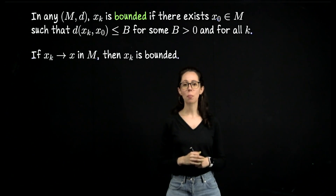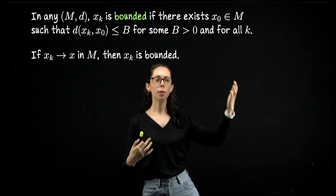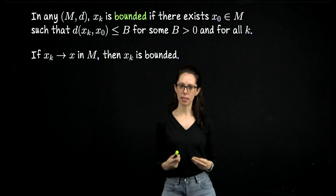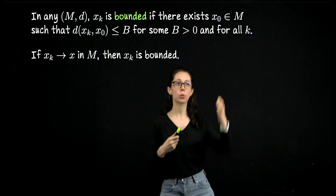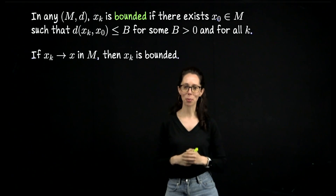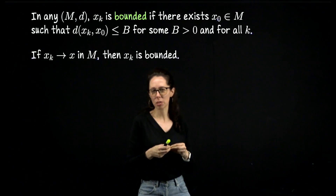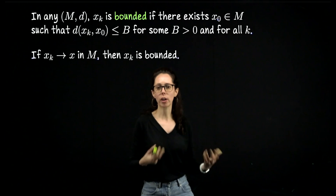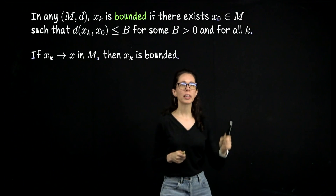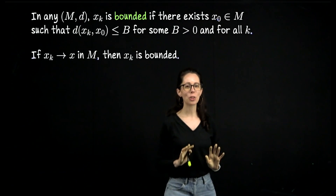Working in a general metric space, a sequence is bounded if there exists an anchor point x sub zero such that when you measure the distances from terms in the sequence to this point, those distances are bounded above by some number capital B. If you think about boundedness of sequences of real numbers, you're measuring off of the origin — here we're just measuring off of this anchor point instead. It turns out any point in the metric space would do.